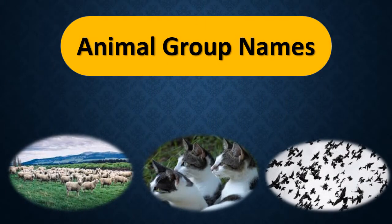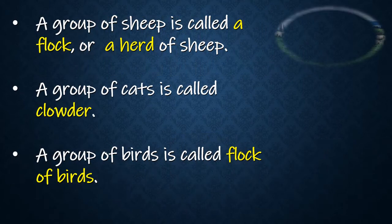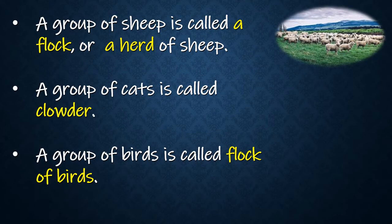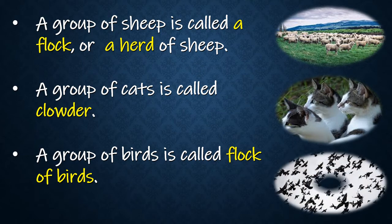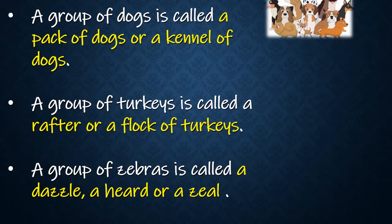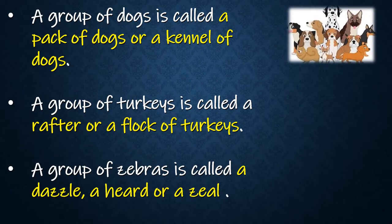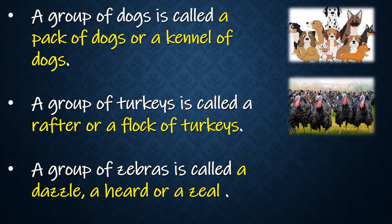A group of sheep is called a flock or a herd. A group of cats is called a clowder. A group of birds is called a flock. A group of dogs is called a pack of dogs or a kennel of dogs.